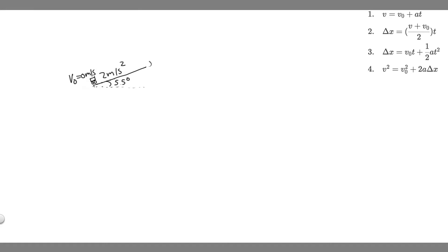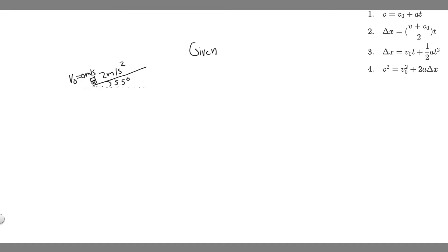Now that we've drawn it, what you want to do is write out the given. Since this is going to be a two-dimensional kinematic problem, you want to write the variables you know in both the x direction and the y direction, because usually you focus on just one direction, but here you need both.